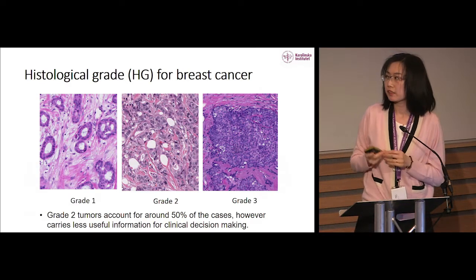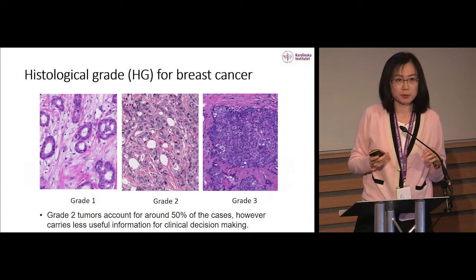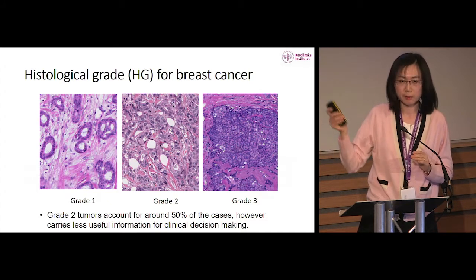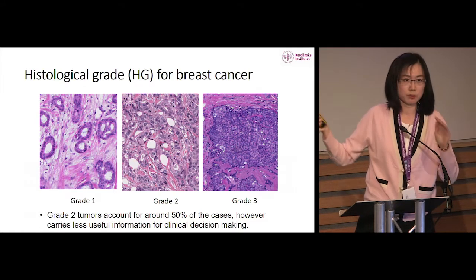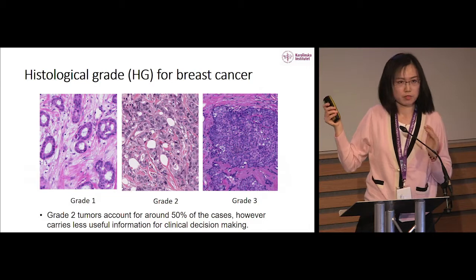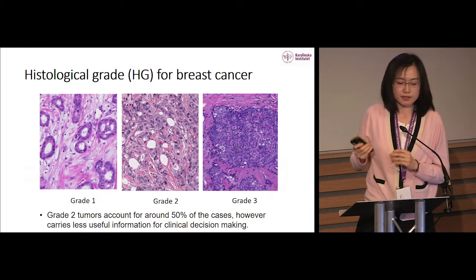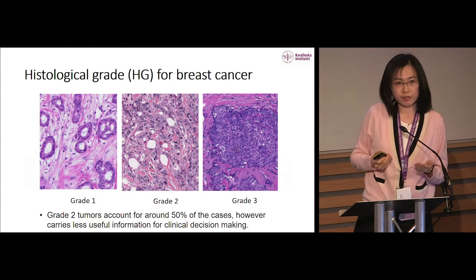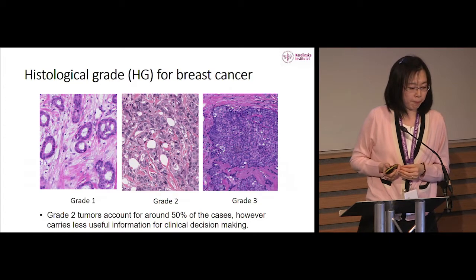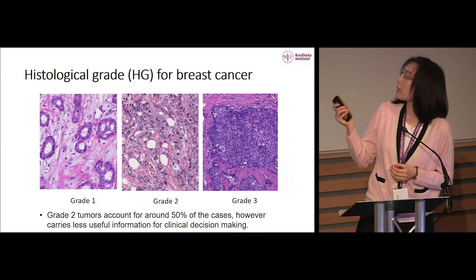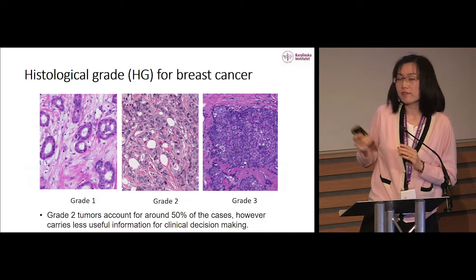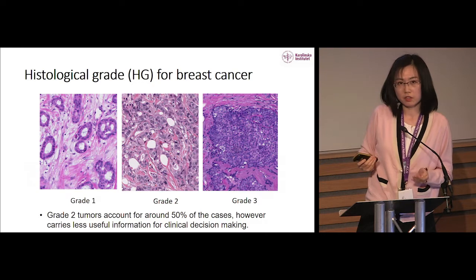Histological grade is based on the level of differentiation of the tumor. We assess morphological patterns in the tissue and give a score ranging from 1 to 3. Grade 1 is relatively well-differentiated and less severe, while grade 3 is the most aggressive. Grade 2 is an intermediate status with larger variance in morphological features and intermediate risk of recurrence. Importantly, grade 2 tumors account for about half the entire population, so this subgroup is what we especially focus on.